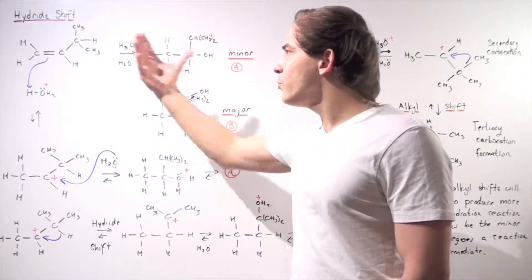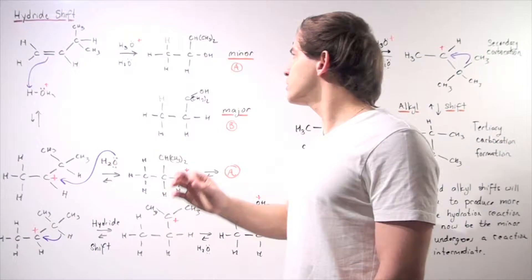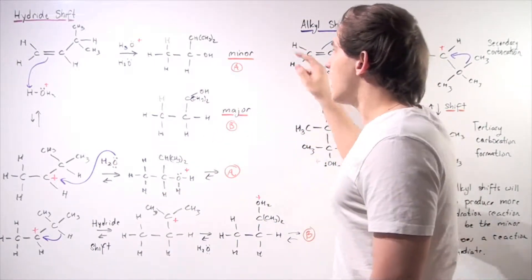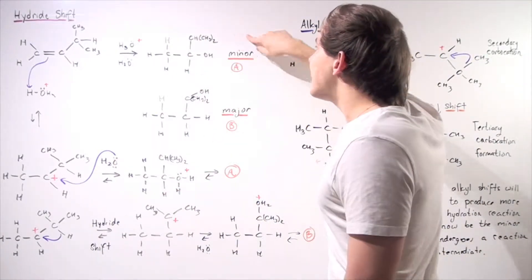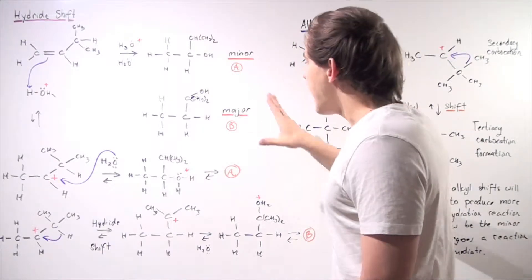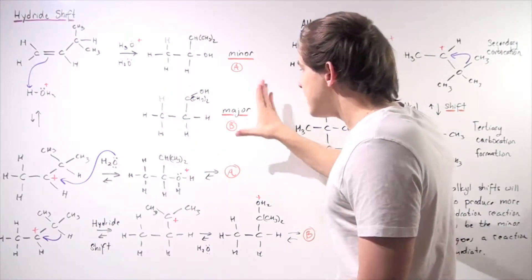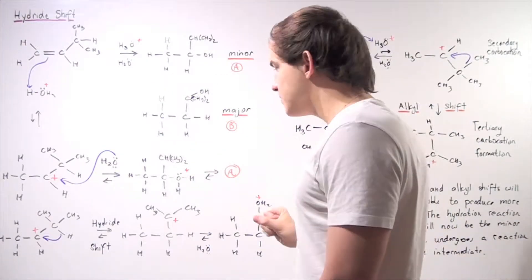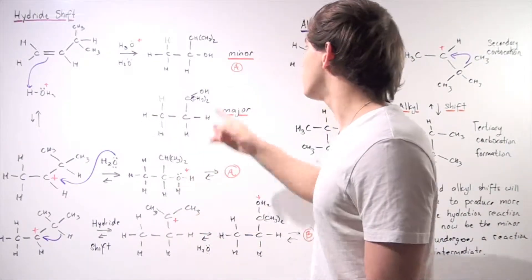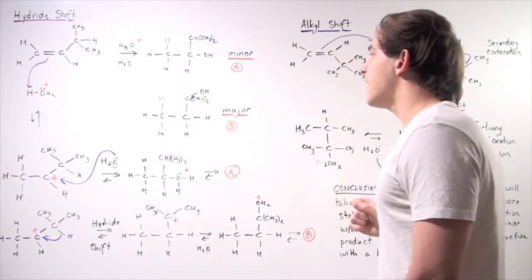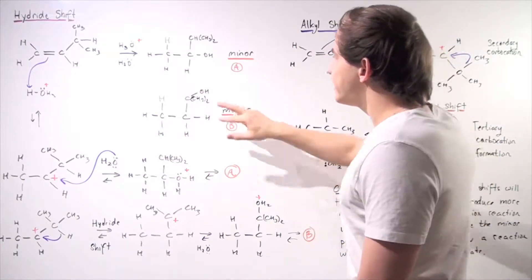If we allow these reactants to react, we will produce two products: Product A, the minor product, and Product B, the major product. Major simply means that Product B predominates over Product A — this product is preferred.